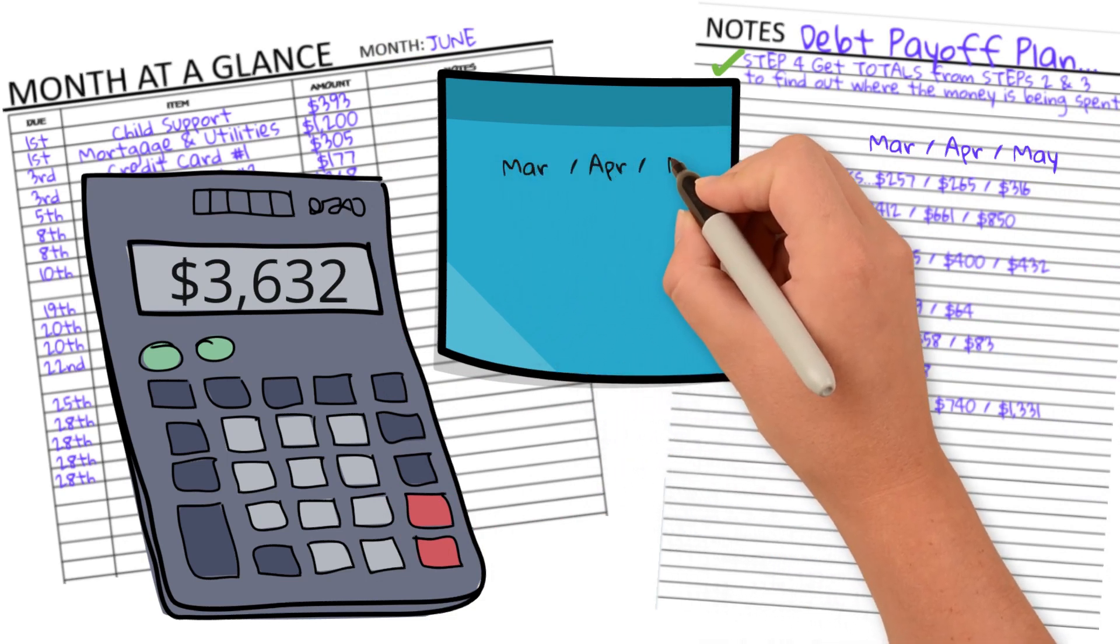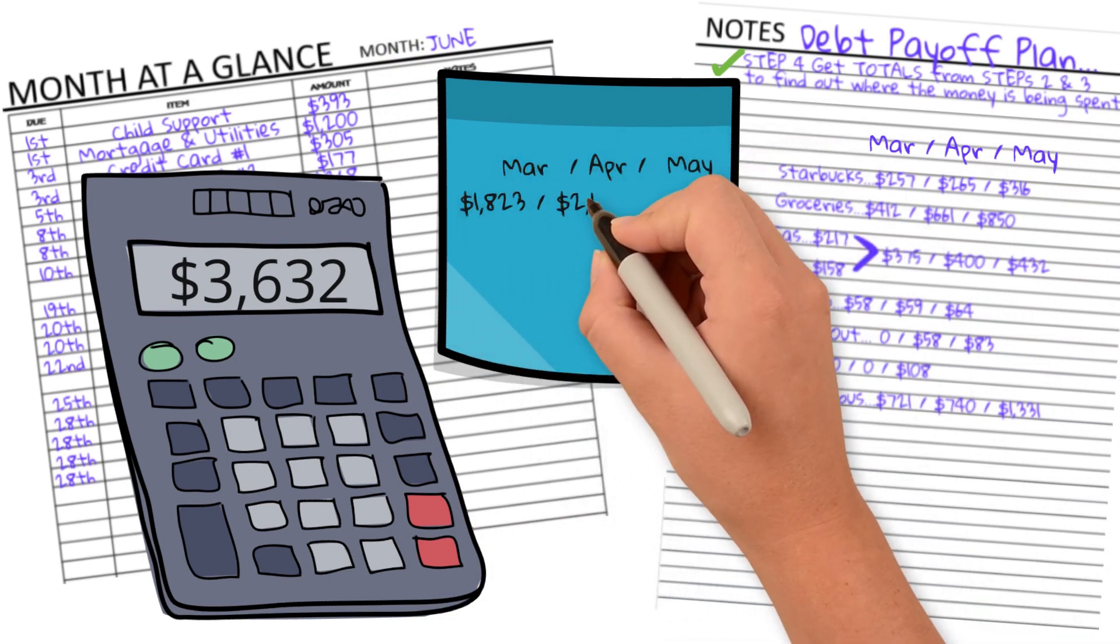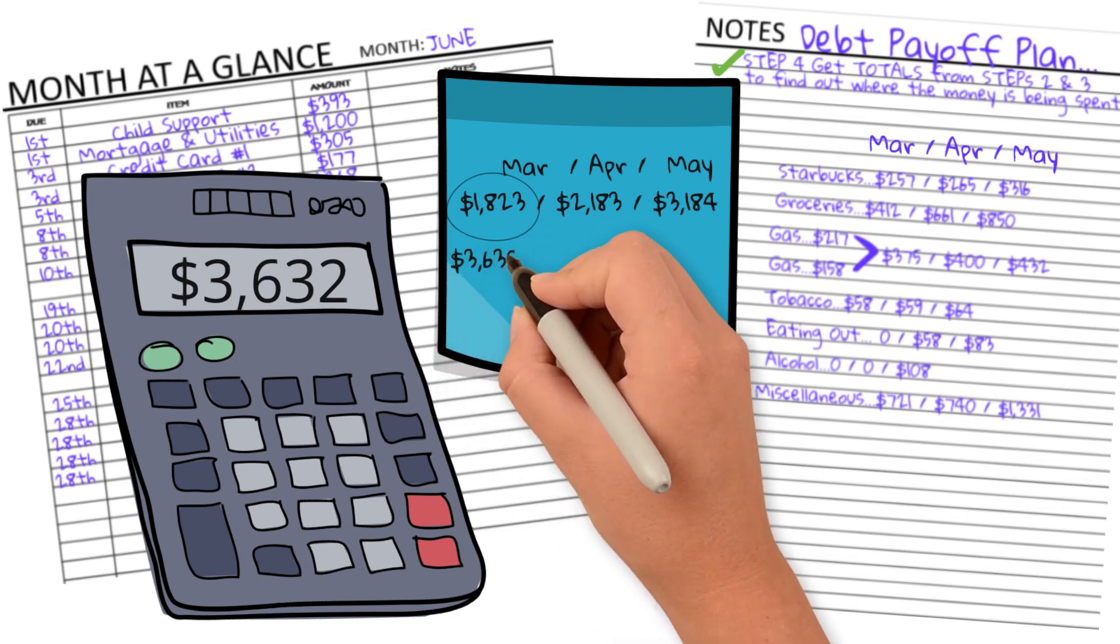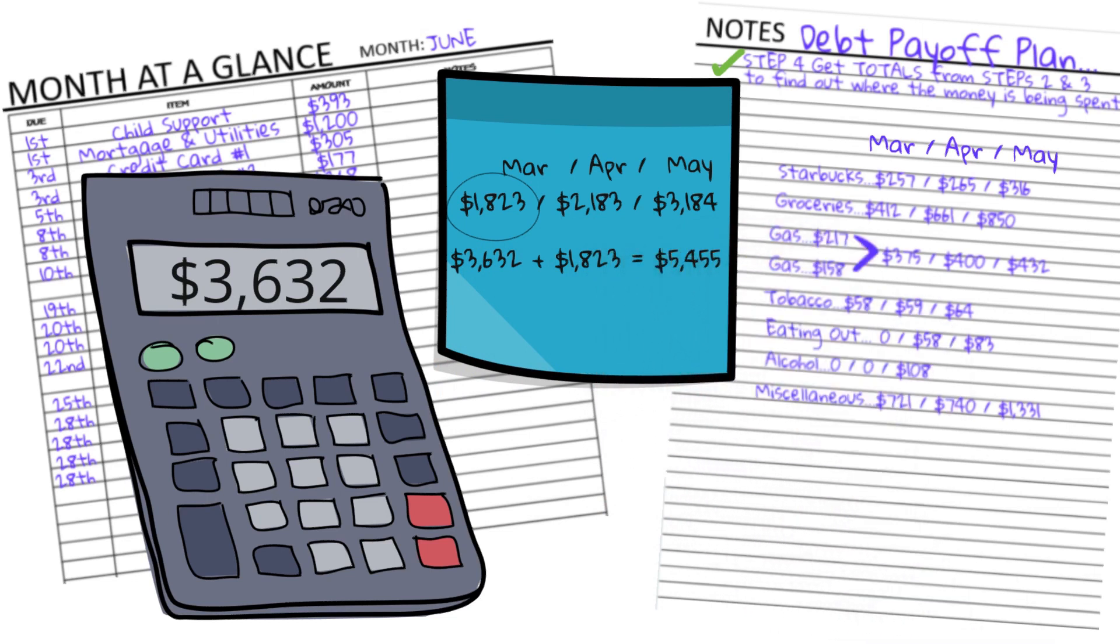March had the least amount of money spent on variables with $1,823. April had $2,183, and May had a whopping $3,184. These numbers are in addition to the $3,632 we need to pay our fixed expenses, our monthly bills.